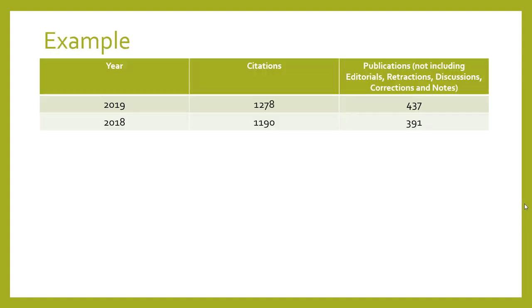Let's look at an example to make this a bit more clear. We've got a certain journal and we've extracted the information that we need. We found the citations in 2019 and the number of publications in 2019.